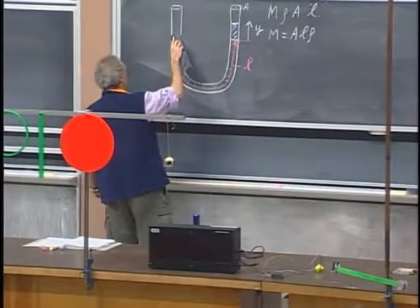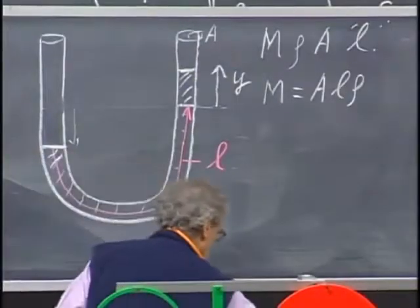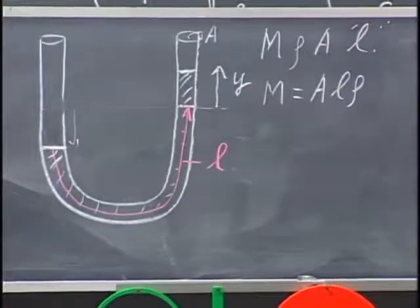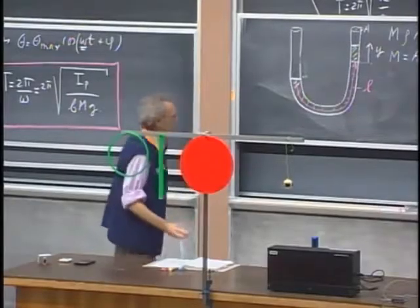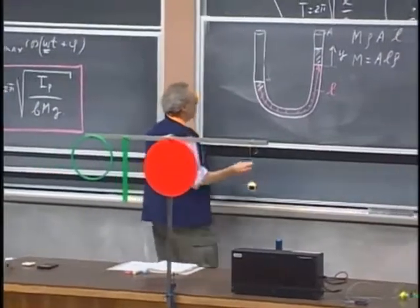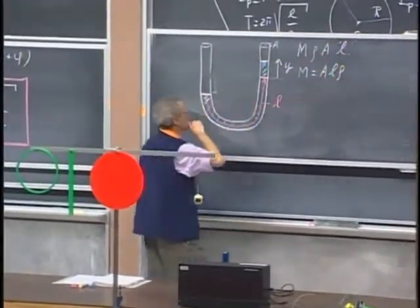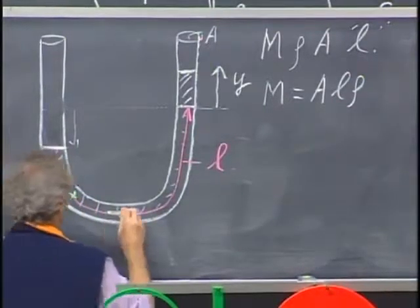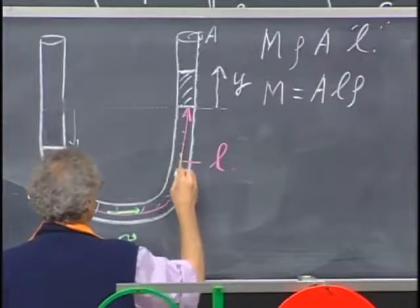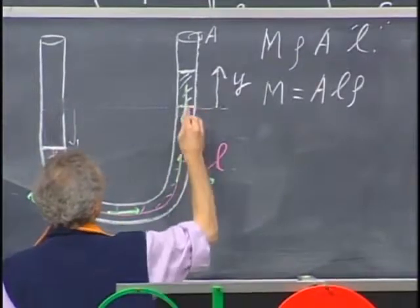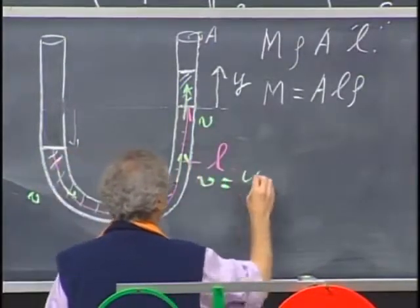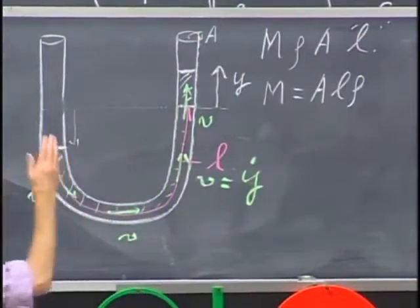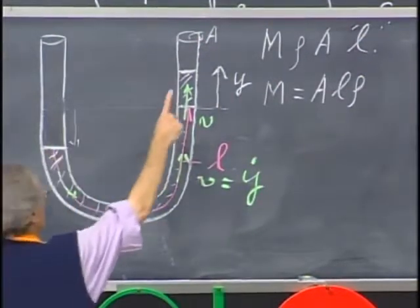Well, when it starts to oscillate, there comes a time that the whole liquid is going to slosh back and forth. So everywhere in the tube, the velocity at any moment in time will be the same because the cross-section is not changing. So if there's a certain velocity here v, then it's the same as the velocity here, as the velocity there. And that, of course, is y dot, the first derivative of that position here.